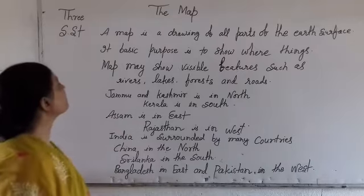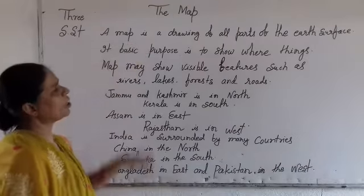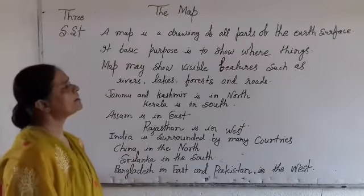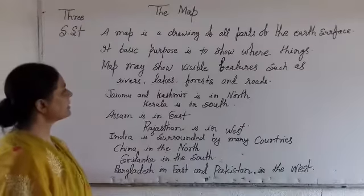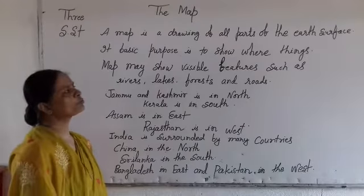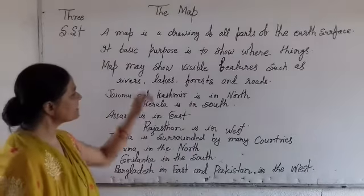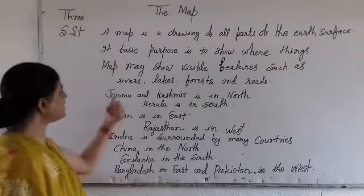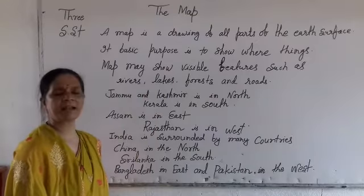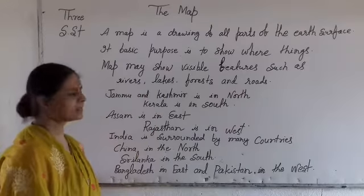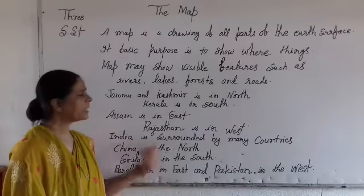Once again: a map is a drawing of all parts of the earth's surface. Its basic purpose is to show where things are. A map may show visual features such as rivers, lakes, forests, roads, and buildings. Jammu and Kashmir is in the north.